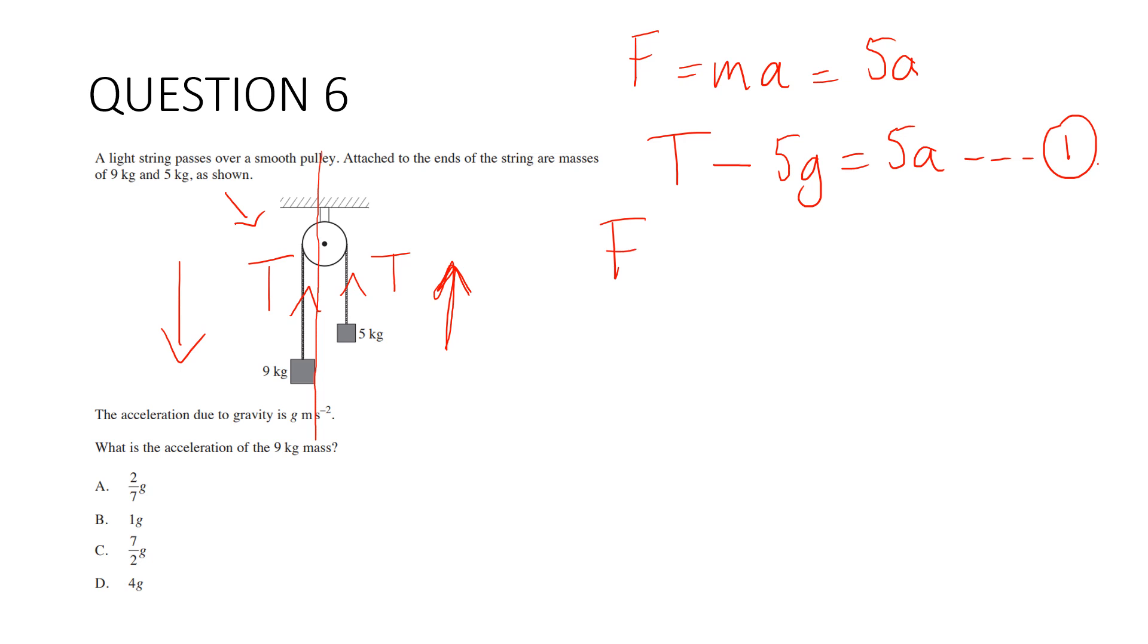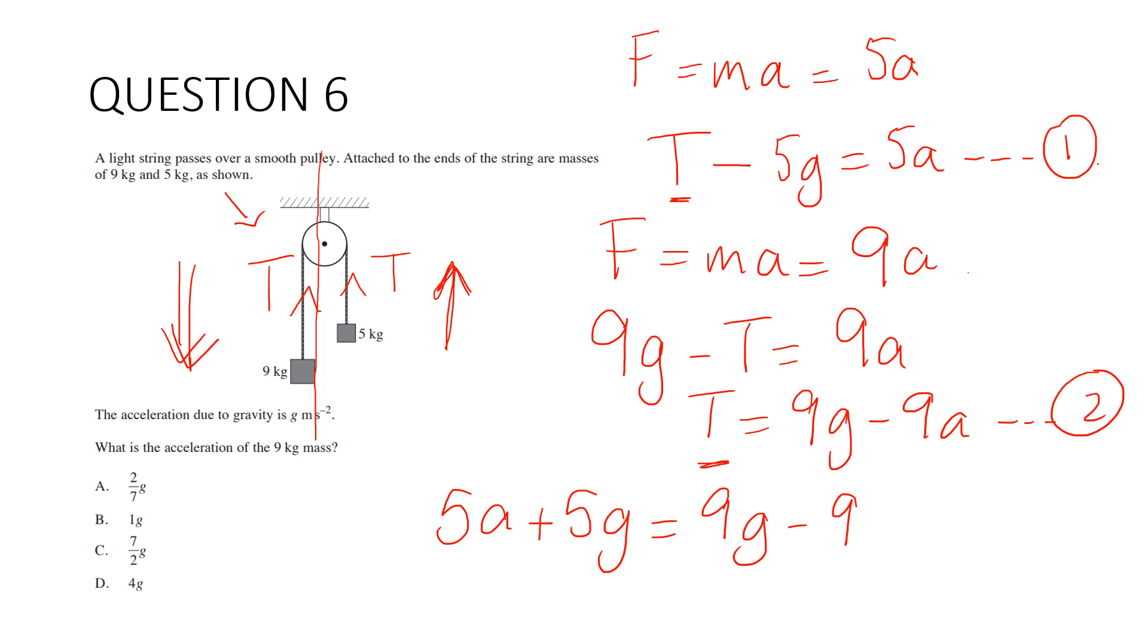Now let's look at this side. F equals ma, but m is 9. Moving in this direction, we get 9g take away the tension equals 9a. So t equals 9g minus 9a. That's our second equation. We eliminate t, so 5a plus 5g equals 9g minus 9a. Solving, we get 14a equals 4g. a equals 2 over 7g. The answer is A.